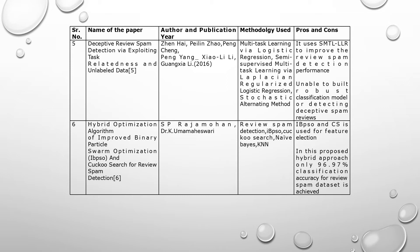The sixth paper is 'Hybrid Optimization Algorithm of Improved Binary Particle Swarm Optimization and Cuckoo Search for Review Spam Detection.' Methodologies used are review spam detection, IBPSO, Cuckoo Search, Naive Bayes, and KNN. The pros and cons: IBPSO and CS are used for feature selection in the proposed hybrid approach, achieving only 96.97% classification accuracy for the review spam dataset.